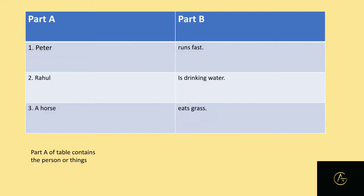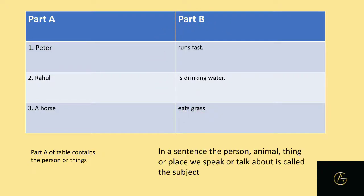In the table, part A refers to the person or thing being talked about — that is the subject. Part B defines the action or what is happening — that is the predicate. So in a sentence, the person, animal, thing, or place we speak about is the subject, and the part which tells what work is going on or what is happening is called the predicate. For example, in 'Peter runs fast,' 'Peter' is the subject.